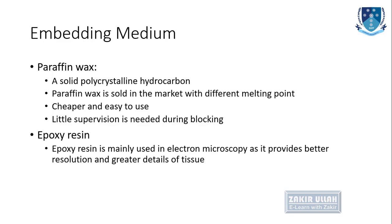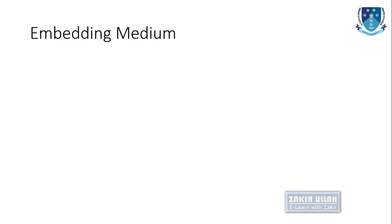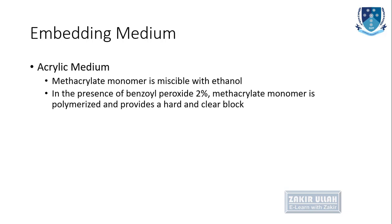The second embedding medium is epoxy resin, which is mostly used for electron microscopy because it provides very good resolution of the tissue and preserves and shows very good detail of the tissue. The third embedding medium is acrylic — the methacrylate monomer, which is miscible with ethanol. In the presence of catalyst 2% benzoyl peroxide, this methacrylate is polymerized and provides a hard and clear surface of the block.